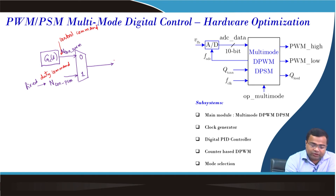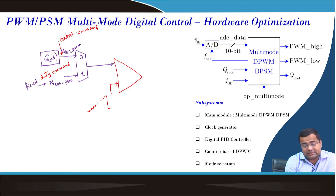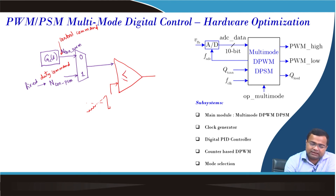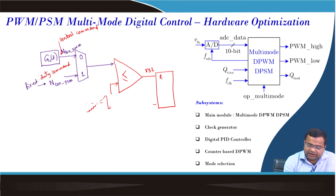The control command — the duty ratio command under closed loop — has to be compared with a sawtooth waveform, meaning we need a counter-based comparator. Based on whether the control command is higher or lower, it will decide. If it is less than or equal, it will generate a reset pulse, which will turn off the switch. We will have an RS flip-flop with a reset and set.